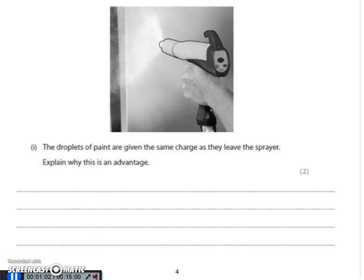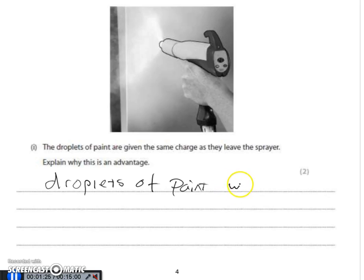While the paint spraying is going on, in the diagram above the paint is given the same charge as it leaves the sprayer, so all the droplets have got the same charge. They've asked you to explain why this is an advantage. Well, if all the paint droplets have got the same charge, then the droplets are going to repel each other.